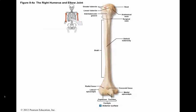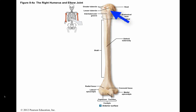This is the anterior surface of the humerus. At the proximal end of the humerus is the round head that articulates with the glenoid cavity of the scapula. The prominent greater tubercle is a rounded projection on the lateral surface of the epiphysis and forms the lateral contour of the shoulder. The lesser tubercle is smaller and is medial to the greater tubercle.